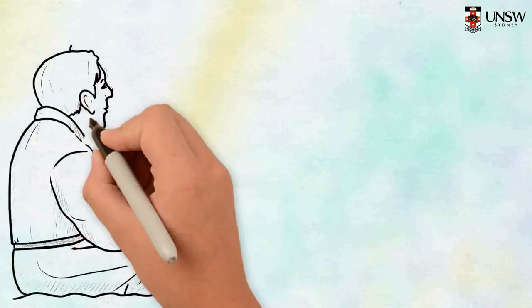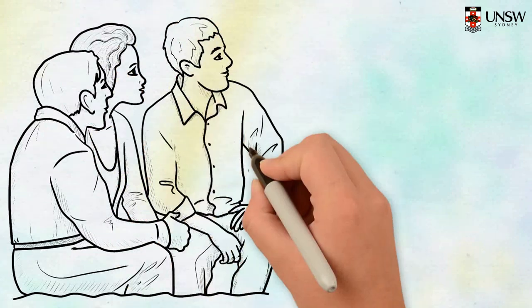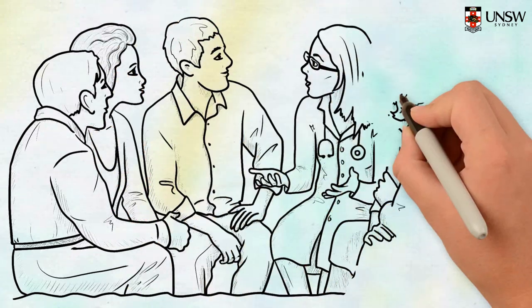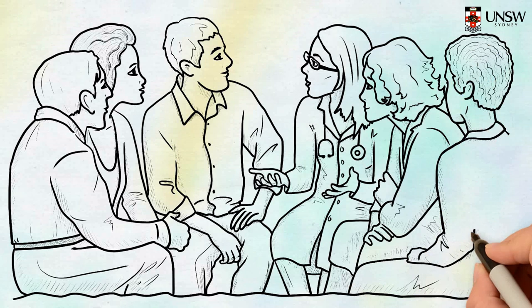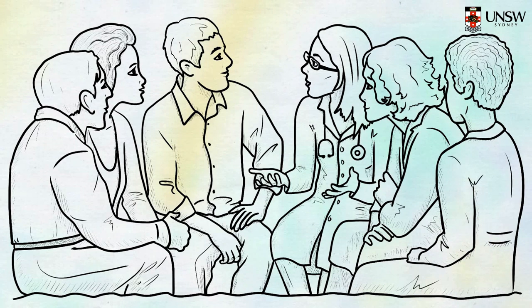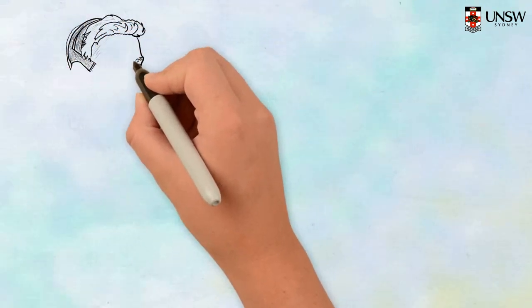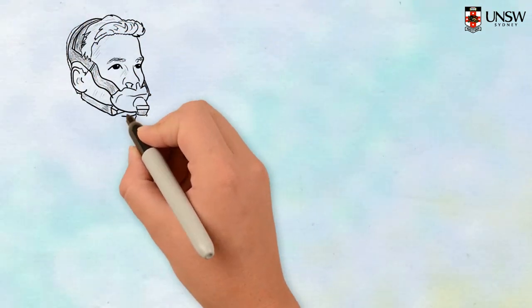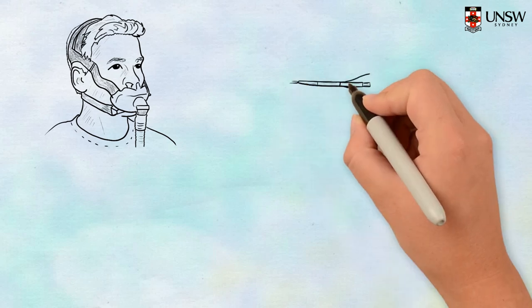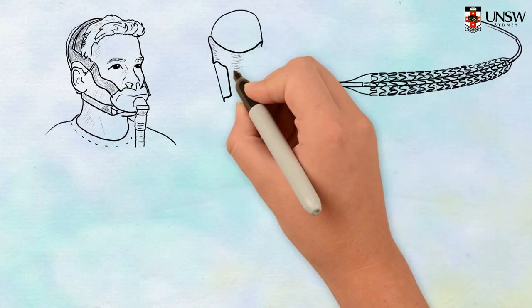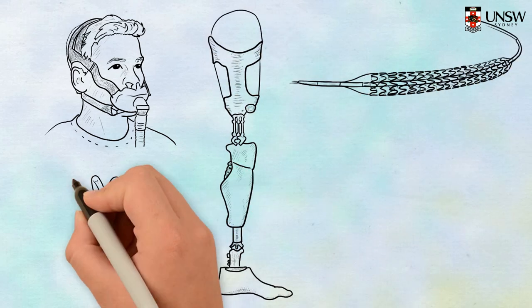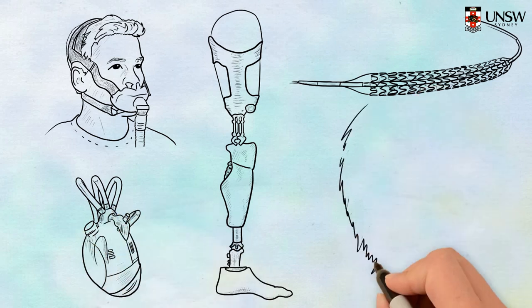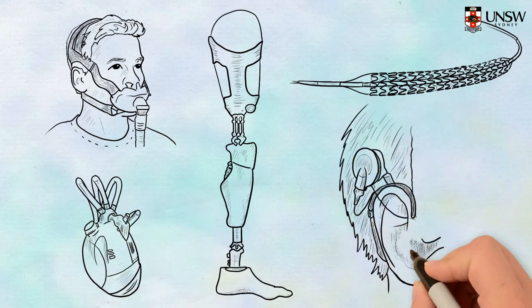In the medical field, there are many areas where engineers can work with medical professionals to help them come up with better solutions to save and improve lives. For example, engineers and medical professionals have collaborated to produce sleep apnea masks, cardiovascular stents, prosthetic limbs, artificial hearts and bionic ears, to name just a few technologies.